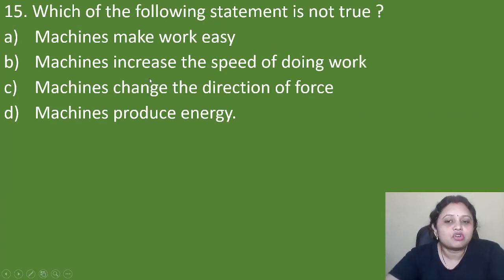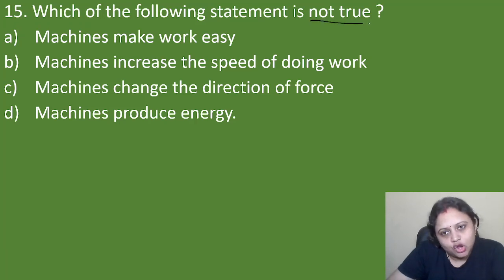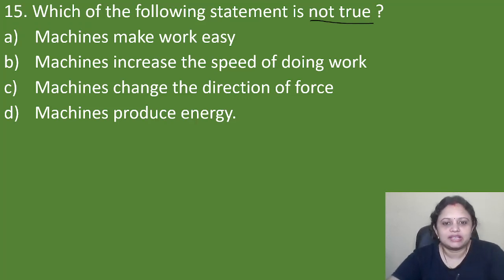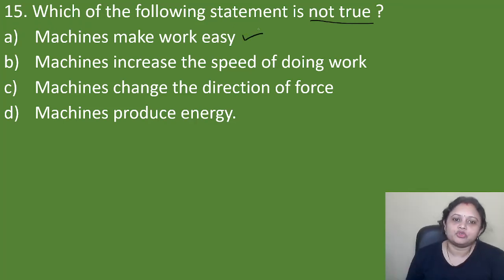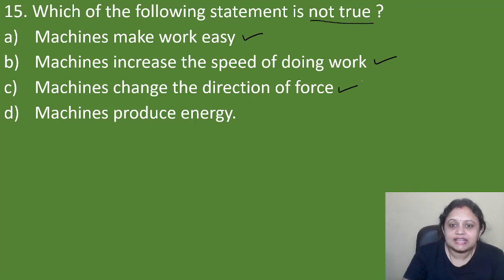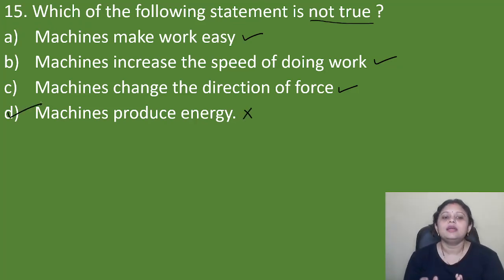Next question: which of the following statements is NOT true? Option A: machines make work easy. B: machines increase the speed of doing work. C: machines change the direction of force. D: machines produce energy. Machines do make work easy, increase speed, and can change the direction of force — but machines do NOT produce energy. So the correct answer is option D — machines produce energy — this statement is not true.